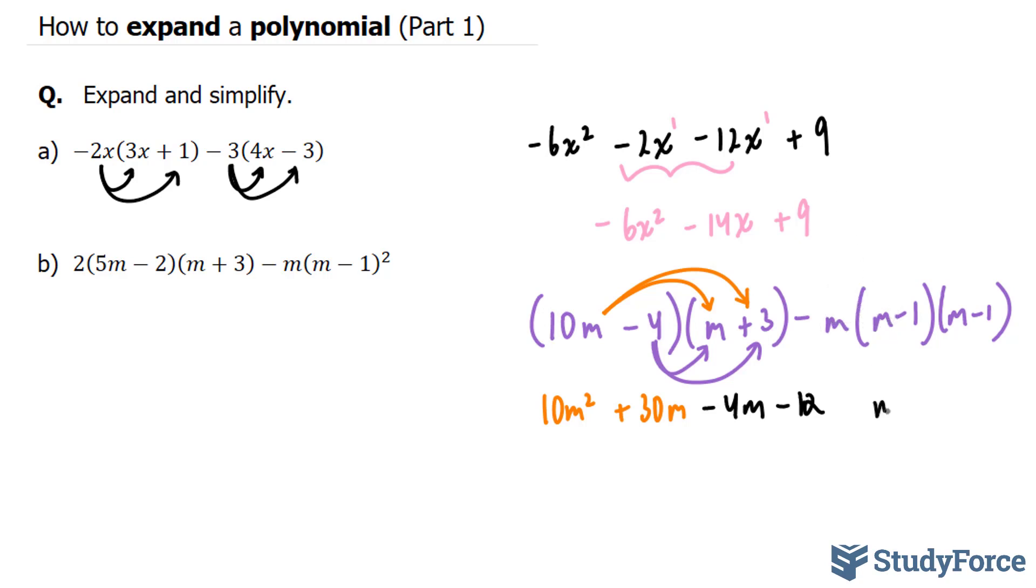So this expression here is the expanded form of this expression. And at the same time, m times m is m squared. m times negative 1 is negative m. I'm going to enclose this in brackets. And I'm going to put this minus at the front. m squared times m gives us m to the power of 3.